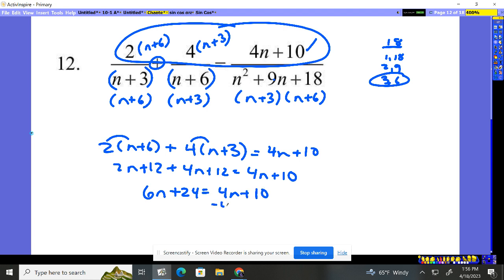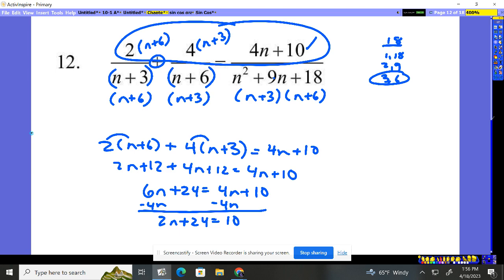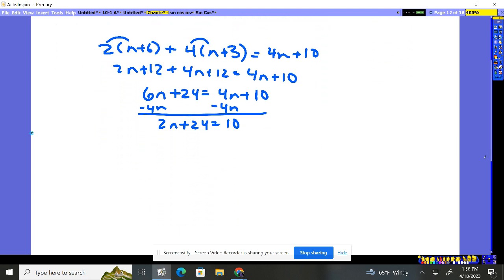So now I'm going to subtract 4n from both sides. I get 2n plus 24 equals the number 10. I just need to move the number over to be with the other number. And we'll get a nice pretty little negative answer. 2n is equal to negative 14.